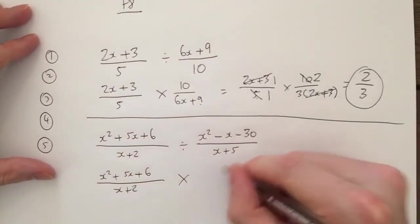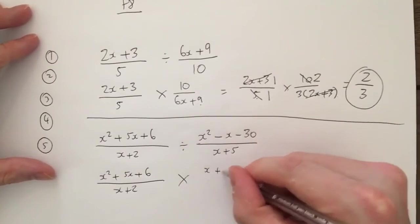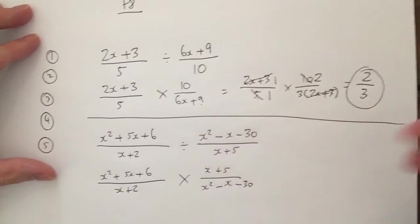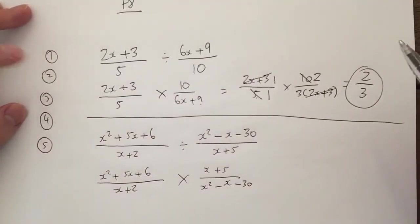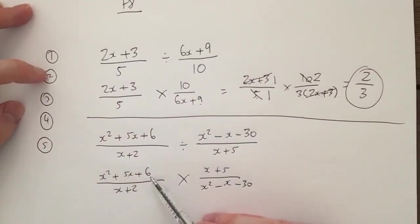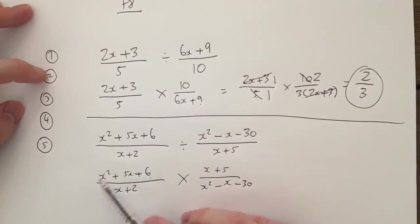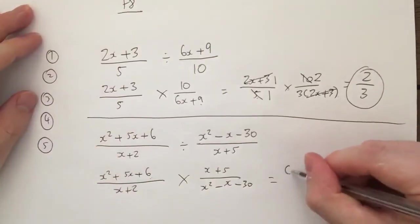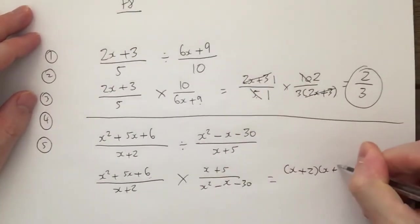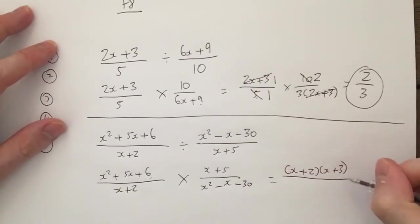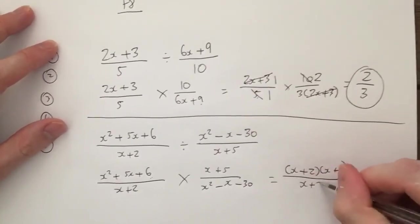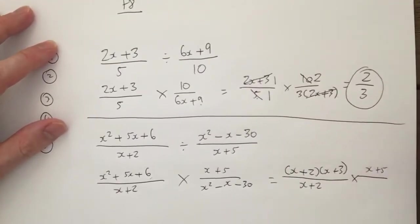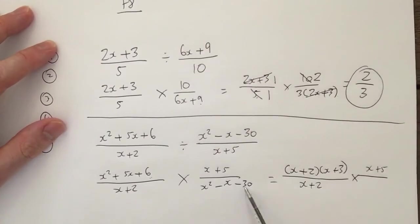Right, second step was to factorize. Can I factorize this? Yes, it's a quadratic, so I absolutely can. Two numbers that times to get 6, add to get 5, will be x plus 2, x plus 3 over x plus 2. Then I times that by x plus 5. And then I say to myself, can I simplify that? The answer is yes, so it will be x minus 6, x plus 5.